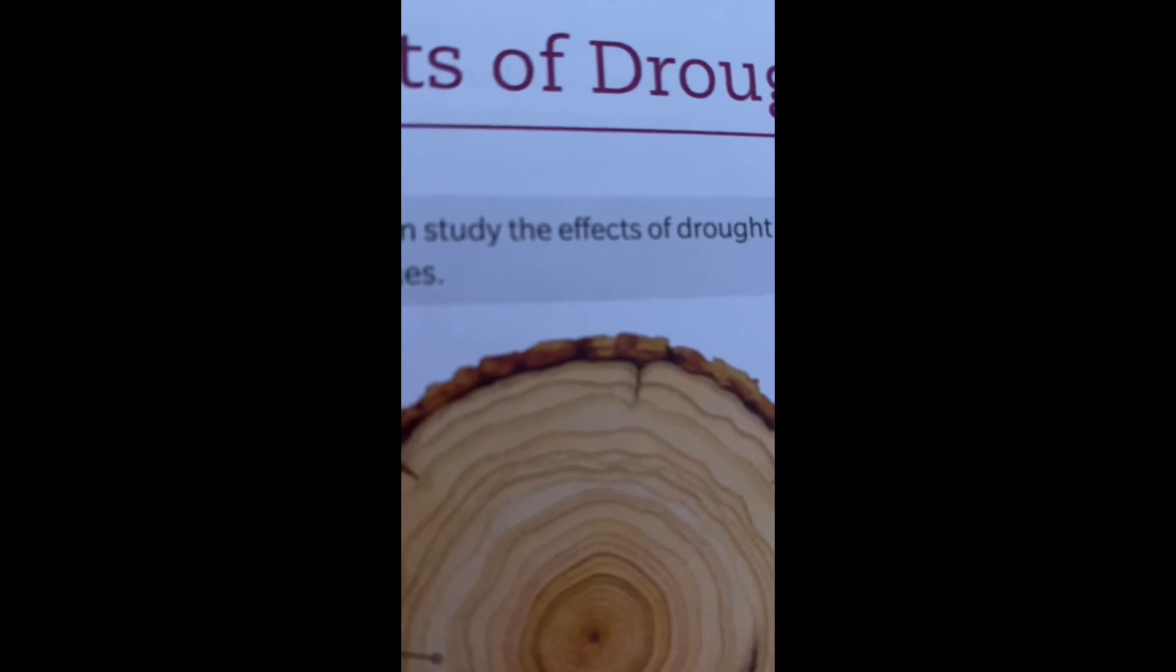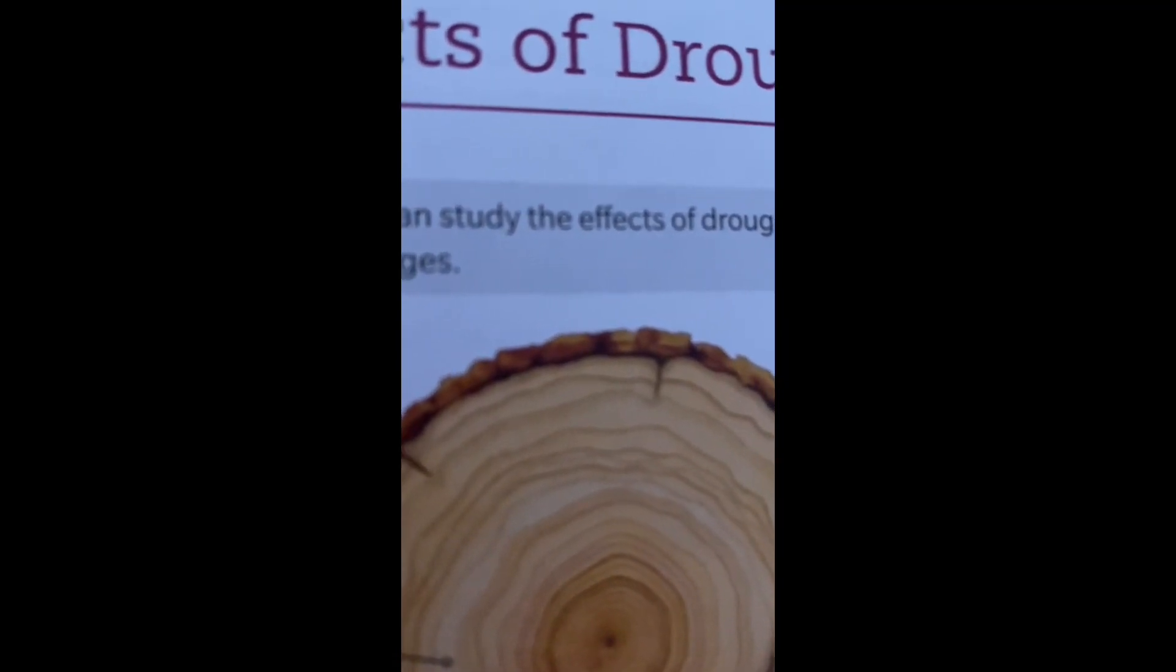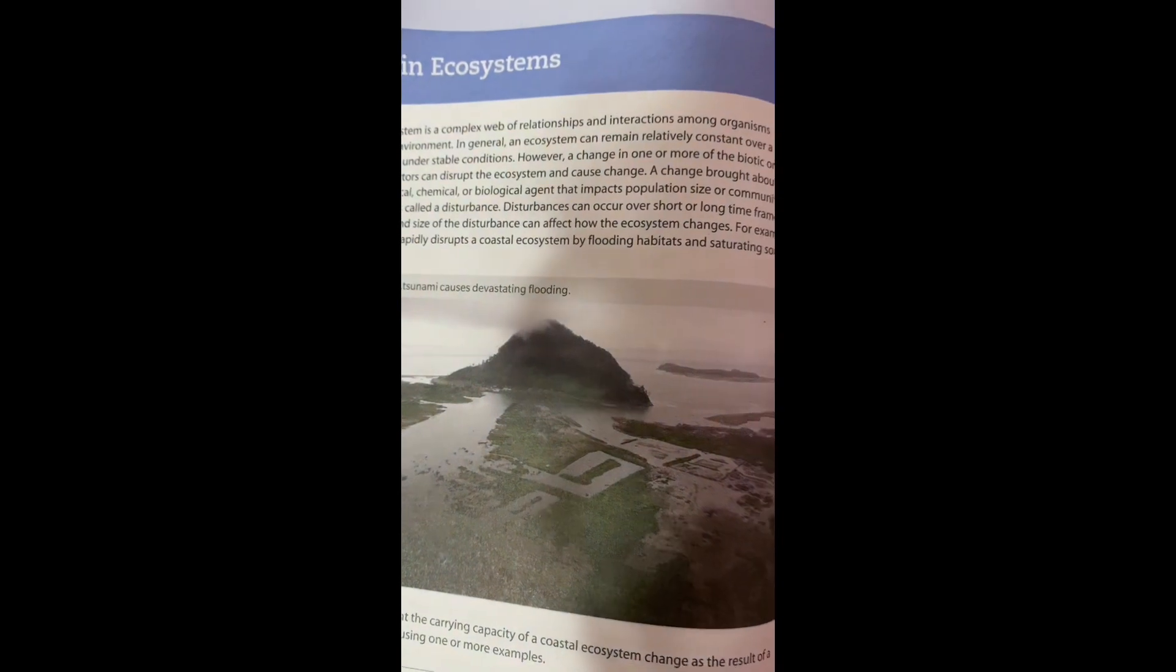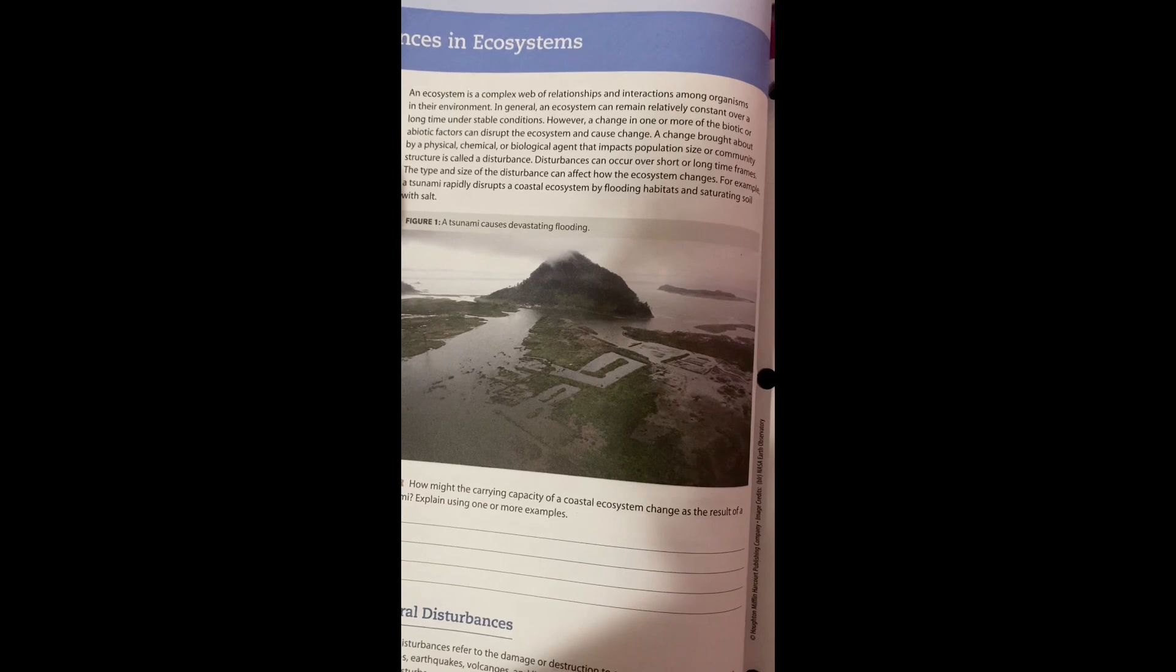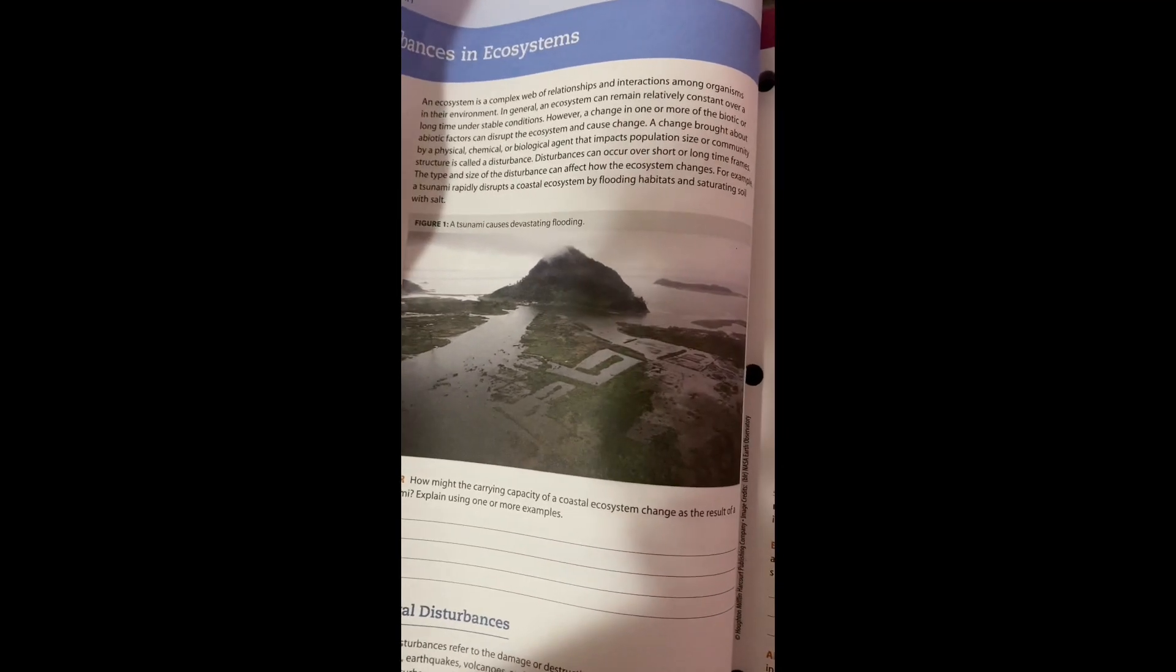Disturbances in Ecosystems. Changing one or more biotic or abiotic factors can disrupt the ecosystem and cause change. Any impact on population size or community structure is called disturbance. Disturbances can occur over short and long time frames. The time and size of disturbance can affect how the ecosystem changes.